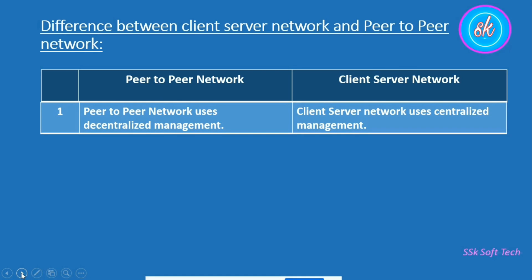The first point is that peer-to-peer network uses decentralized management. In a peer-to-peer network, resources are spread all over the network, so it uses decentralized management. But in a client-server network, the resources are present on the server machine only, and the server machine is responsible to manage those resources. So the resources are managed centrally, and because of that, the client-server network uses centralized management.